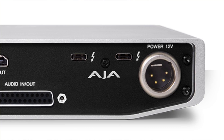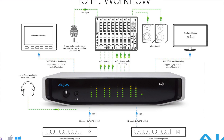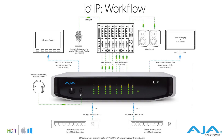AJA's IO IP allows seamless transition for broadcast over IP. Professionals rely on the tremendous power of Thunderbolt 3 technology to connect laptops or desktops over USB-C, which is exactly what the IO IP was designed to do. The unit offers a familiar IO experience for any current 2K, HD/SD, high frame rate, deep color, and HDR workflows to move into an IP stream.